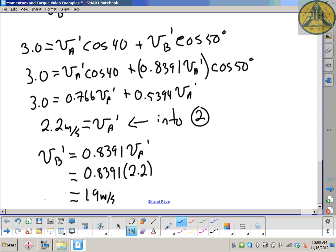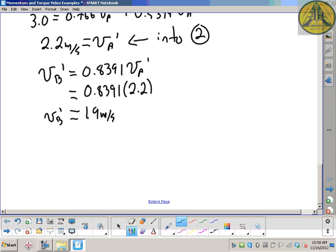So we're done. We got the magnitudes. Like I said, a lot of math, but solvable. Just have to be very careful with your numbers. VA prime summary equals 2.2 meters per second. And object B goes down at that angle 50 degrees at 1.9 meters per second.